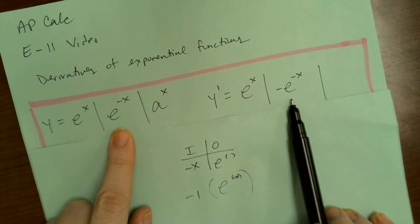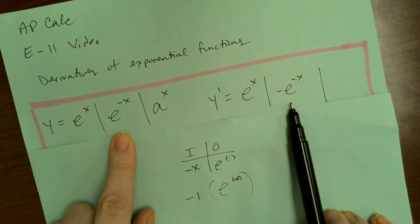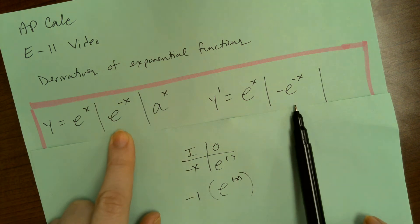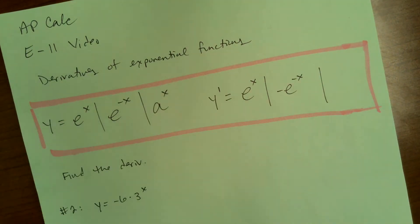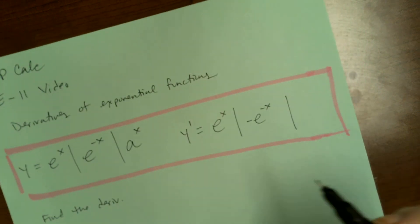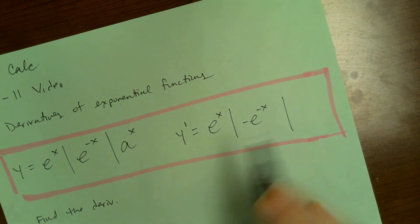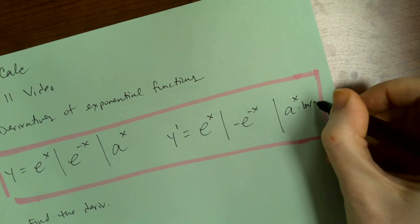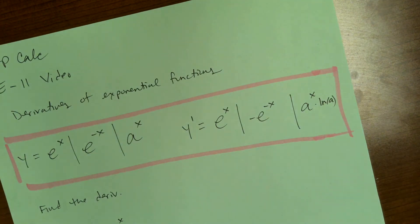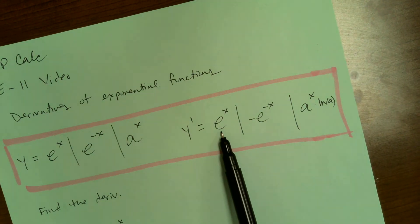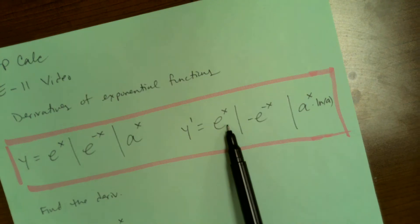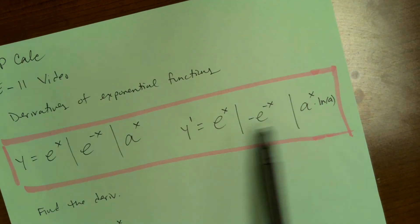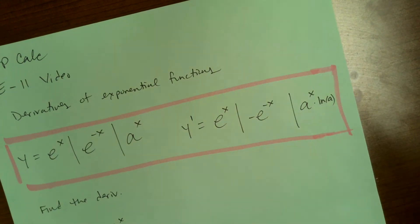Some years I've encouraged students to just know this as a formula; other years I've said to use chain rule when you come across it, but I think it's worth writing down as a formula. For a to the x, where a is any base, it's similar to the first derivative: a to the x times natural log of a. You could think of this as the same formula, since natural log of e is just 1.